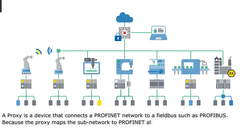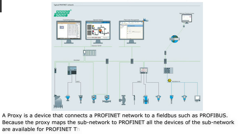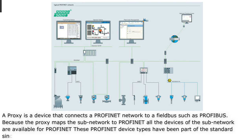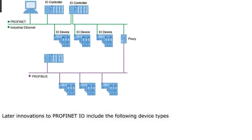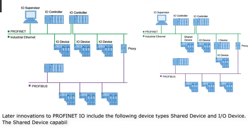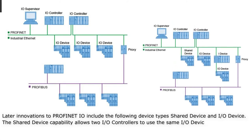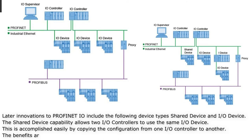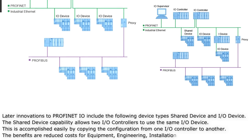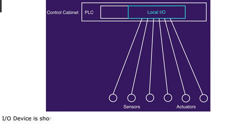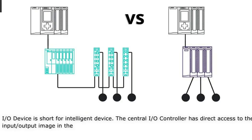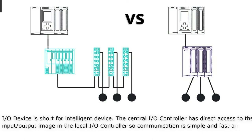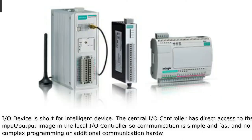Because the proxy maps the sub-network to Profinet, all devices of the sub-network are available on Profinet. Later innovations to Profinet I-O include the shared device and I-Device types. The shared device capability allows two I-O controllers to use the same I-O device, accomplished by copying the configuration from one I-O controller to another, reducing costs for equipment, engineering, installation, and maintenance. I-Device (intelligent device) allows the central I-O controller direct access to the input/output image in the local I-O controller, so communication is simple and fast with no complex programming or additional communication hardware required.